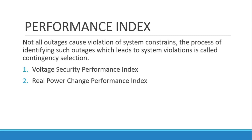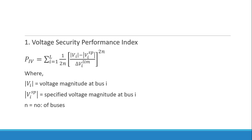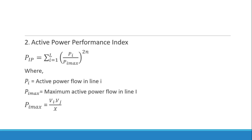As explained, not all outages cause violation of system constraints, so identifying those that do is called contingency selection. We discuss two performance indices: the voltage security performance index, where vi is the voltage magnitude at bus i, vi_sp is the specified voltage magnitude at bus i, and n is the number of buses; and the active power performance index, where pi is the active power flow in line i and pi_max is the maximum active power flow in line l, given by vi times vj divided by x.